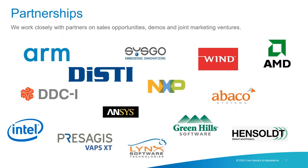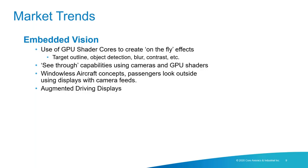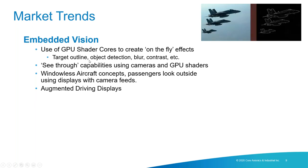We work closely with a number of partners, including DISTI, with whom we are presenting today. Regarding market trends: embedded vision is the biggest trend, where GPU shader cores create on-the-fly effects such as target recognition — detecting objects like aircraft, dogs, people, or other cars. We can provide target outline, object detection, blur contrast, and FFT effects which may be used as primary algorithms for sensor detection.